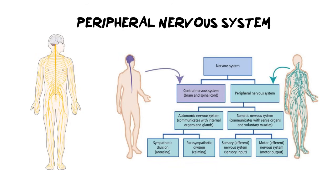Now that we've covered the central nervous system — the brain and the spinal cord — we need to move into the peripheral nervous system. Peripheral means on the periphery or the edges, and it refers to all the other nerves of the body: everything that runs down into your arms, legs, and to all the organs. The peripheral nervous system is divided into two types: the autonomic nervous system and the somatic nervous system.